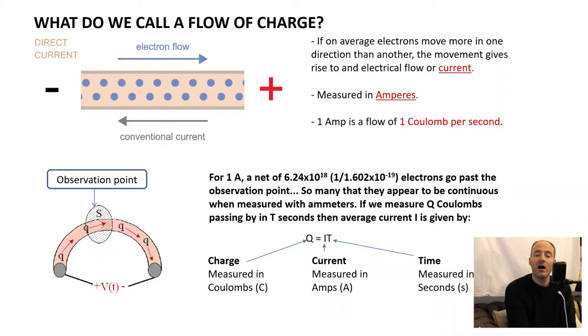If on average, electrons move more in one direction than another, as that diagram shows, the movement gives rise to what we call a current. Currents are measured in amperes and one amp is a flow of one coulomb per second. So what on earth is a coulomb? A coulomb is a measure of charge and it is equivalent to 6.24 times 10 to the 18 electrons. If we imagine our wire and we have an observation point cut through the wire like a surface, and we're counting how many electrons passed that in a given time, then we will say one coulombs worth of electrons will have passed once we've counted 6.24 times 10 to the 18 electrons. That's an awful lot of electrons.